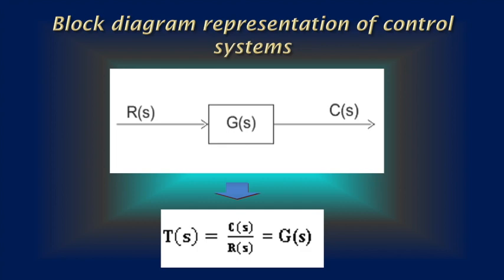Block Diagram Representation of Control Systems: Any system can be described by a set of differential equations, or it can be represented by the schematic diagram that contains all the components and their connections. A Block Diagram is a representation of a system using blocks. All the blocks are interconnected by lines and arrows, indicating the flow of signals from output of one block to the input of another. For representing any system using a Block Diagram, it is necessary to find the transfer function of the system, which is the ratio of Laplace of output to Laplace of input with all initial conditions equal to zero.